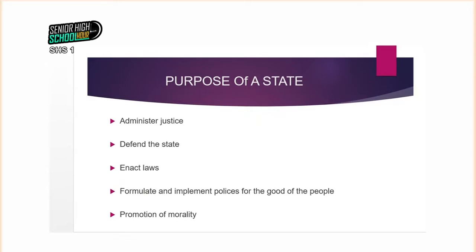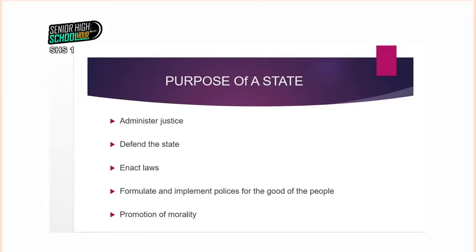We also see that the purpose of the state is to formulate and implement policies for the good of its people. In a state there are people who live there — either foreigners or citizens. The executive arm of government would formulate policies or ideas that would help the people grow better, develop faster, and make sure the people live in coordination with the affairs of the state. The executive is made up of the president and vice president, cabinet, the civil service, and the security agencies — this is what pertains in Ghana.